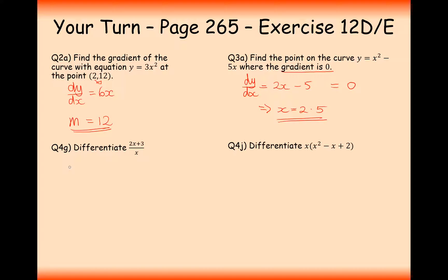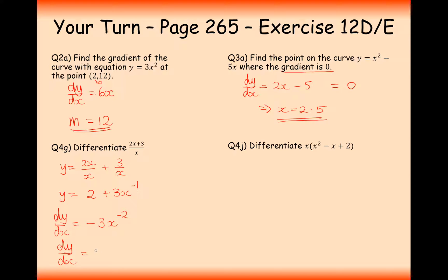Here is one of the fraction questions. Remember the first thing to do is split up the numerator: it's going to be 2x over x plus 3 over x. Simplify as indices: 2x over x cancels to 2, and it's plus 3x to the minus 1. When we differentiate, the constant 2 disappears, and it's minus 3x to the minus 2. Rewriting as a fraction: minus 3 over x squared — that's the differential of that function.